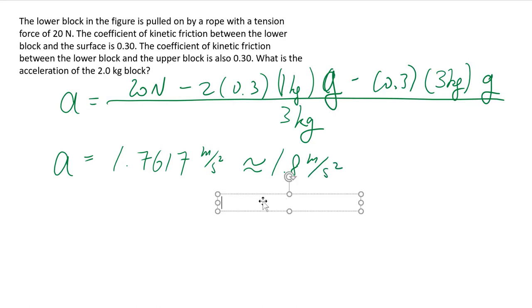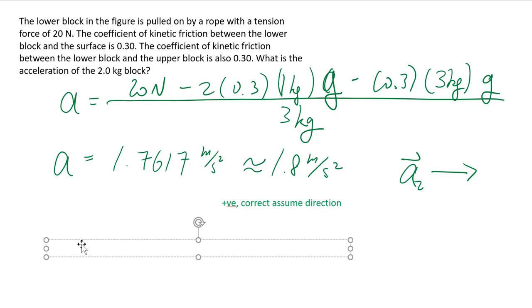It's reassuring that at the end, we get a positive number, because otherwise, the direction would be all kinds of weirdness. But the positive number implies that our direction has been treated properly, and it does, in fact, move to the right. Putting all that together to a final nice, pretty-looking sentence, to actually answer the question, the acceleration is a vector. We're talking about the vector acceleration has that magnitude and that direction. You can't just say positive x, because we define what positive x was. We have to say to the right.